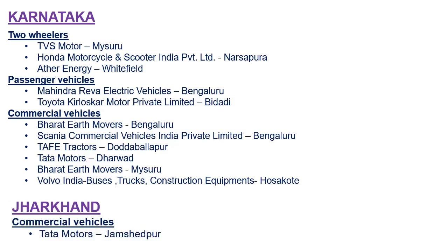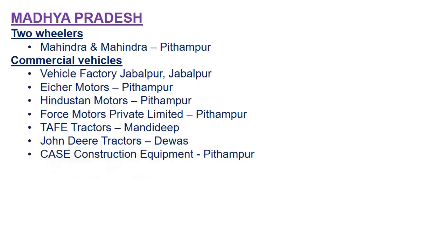In Jharkhand, Tata Motors has commercial vehicles at Jamshedpur. In Madhya Pradesh, the two-wheeler section has Mahindra & Mahindra at Pithampur. Commercial vehicles include Vehicle Factory Jabalpur, Eicher Motors at Pithampur, Hindustan Motors at Pithampur, and Force Motors at Pithampur.